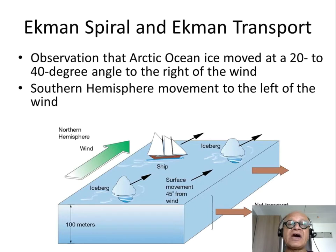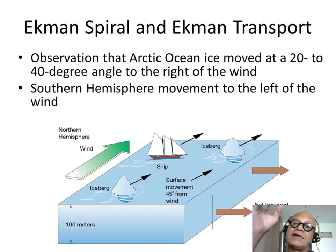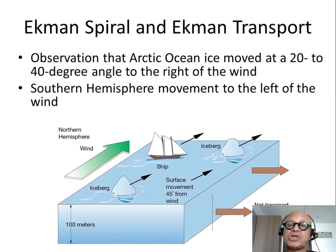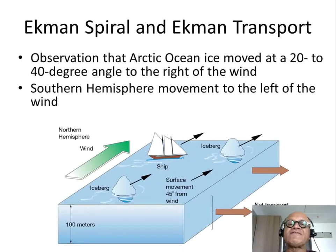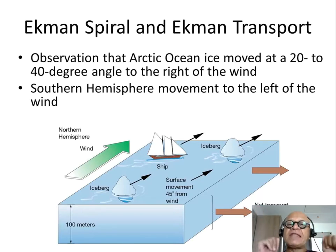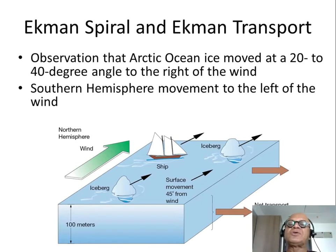Fridtjof Nansen used to go to the poles and sometimes got stuck in the ice. He built a ship with additional reinforcement so that it doesn't get crushed by the ice. He had noticed that icebergs and ice floes actually did not move in the direction of the prevailing winds — they were going at an angle to the winds. So he came back and told his graduate student, Vagn Walfrid Ekman, who is Swedish, about this curious thing he had observed.